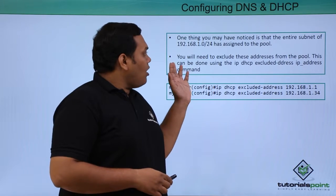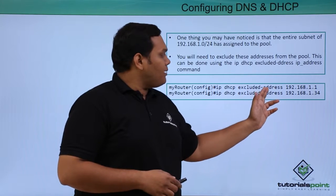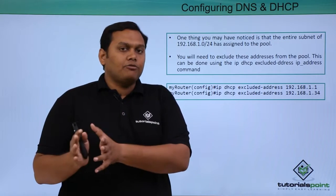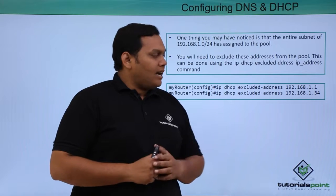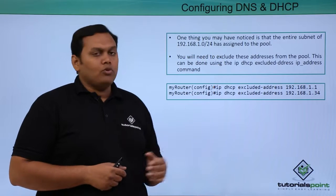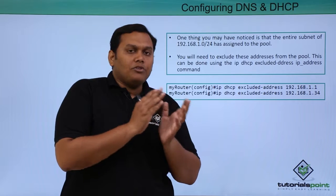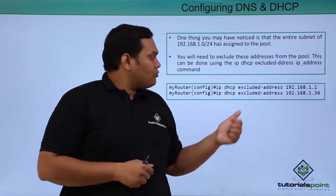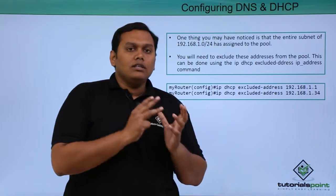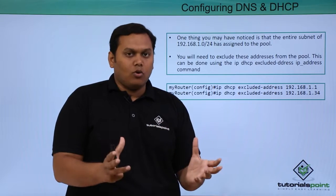You can also exclude IP addresses from the pool using: ip dhcp excluded-address 1.1 and 1.34. These two IP addresses will be excluded from the pool. Since the entire subnet is assigned to the pool, certain addresses such as the router and DNS server addresses need to be excluded. This is how DNS and DHCP are configured on interfaces or the router to get connectivity in the network.